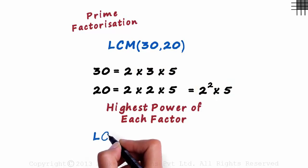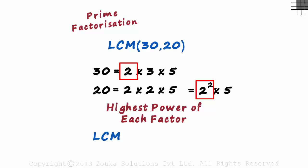Let's write the LCM here. The first factor is 2 and 2 squared is higher than 2. So we write a 2 squared here.